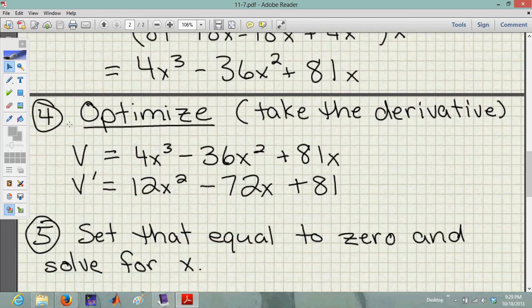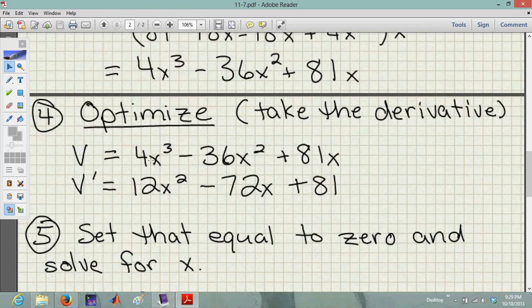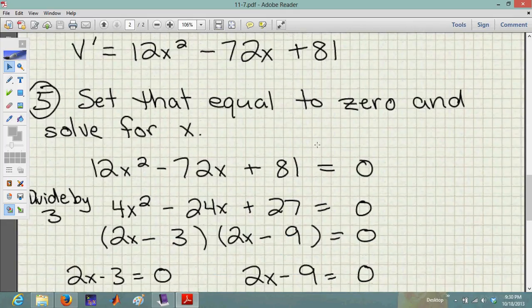So now we need to optimize. How do we optimize? We take the derivative. So my volume formula that I came up with, 4x cubed minus 36x squared plus 81x, I take the derivative. That's how we optimize, that's the first step in figuring out what the biggest volume is going to be. So I take my derivative, 3 times 4 is going to give me 12x squared. 2 times 36 is going to give me 72x. And then the derivative of 81x is 81. So here is my derivative. That's my v prime, that's the thing I need to set equal to 0 and solve for x.